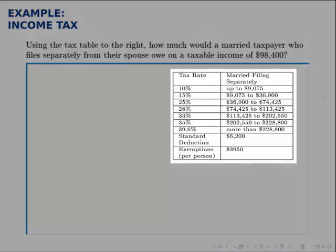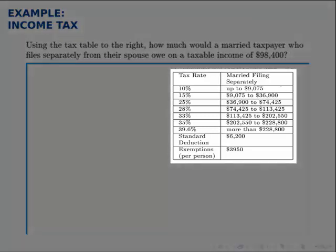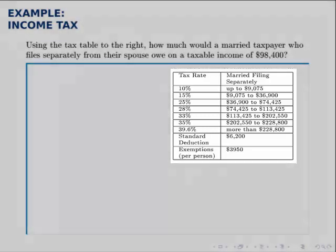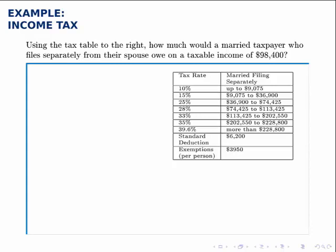Here's an income tax problem. We're given a tax table and we're asked to find how much someone who is married and filing separately from their spouse will owe on a taxable income of $98,400. The first step with a problem like this, where we have the taxable income and want to find the tax owed, is to split up the income into different tax brackets.